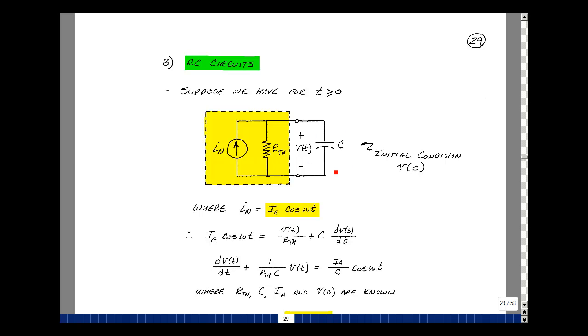Just like our previous circuits, let's assume there's only one capacitor in our circuit. And that this capacitor could have an initial condition, we'll call that V of zero.